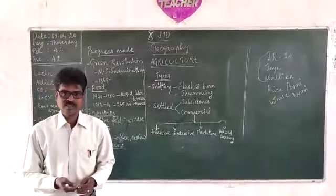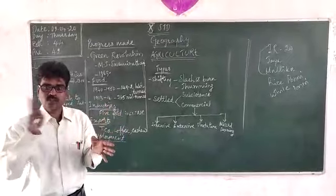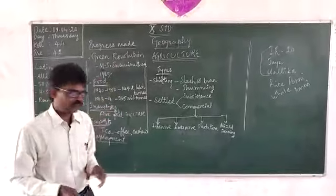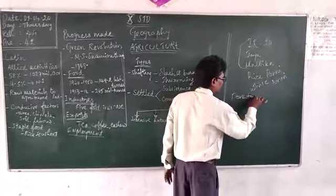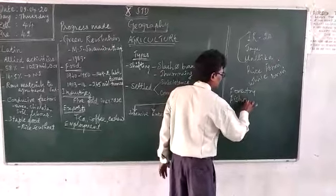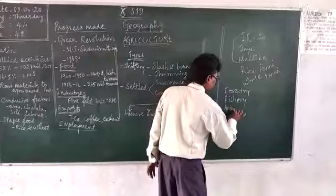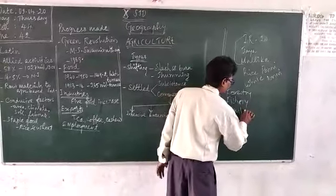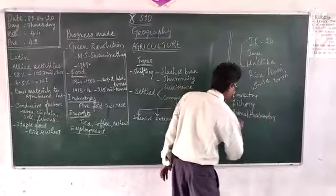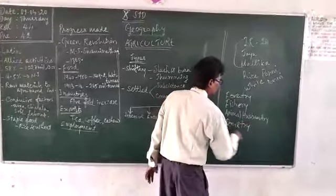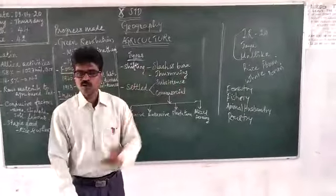As the summary, if you see agriculture, when I say agriculture, it includes the allied activities: forestry, fishery, animal husbandry, and poultry. So when we say agriculture, a single crop will include all of these four also.